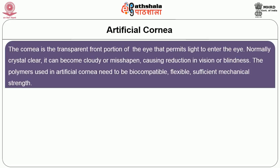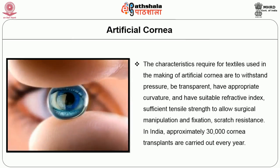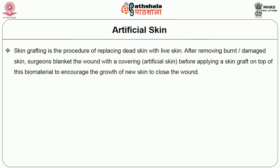The cornea is a transparent portion in front of the eye that permits light to enter. Normally crystal clear, it can become cloudy or misshapen, causing reduction in vision or blindness. Polyesters used in artificial corneas need to be biocompatible, flexible, and have sufficient mechanical strength. The artificial cornea is made using materials such as PMMA, PHEMA, and PVA. Characteristics required for textiles used in making artificial corneas include the ability to withstand pressure, be transparent, have appropriate curvature and suitable refractive index, sufficient tensile strength for surgical manipulation and fixation, and scratch resistance. In India, approximately 30,000 corneal transplants are carried out every year.